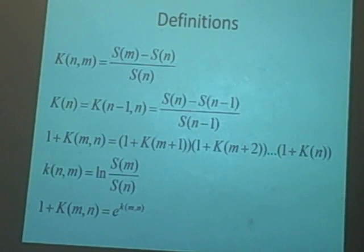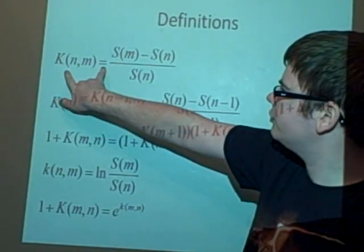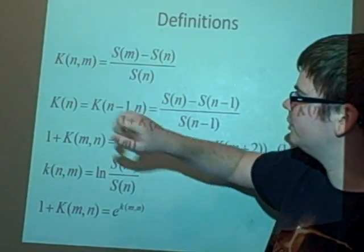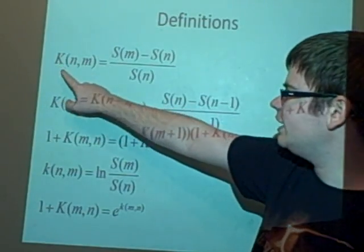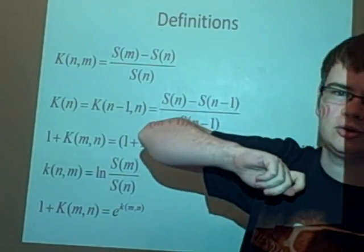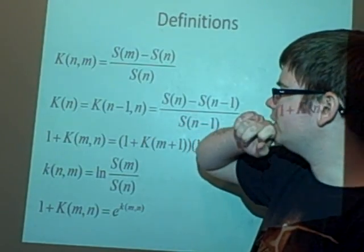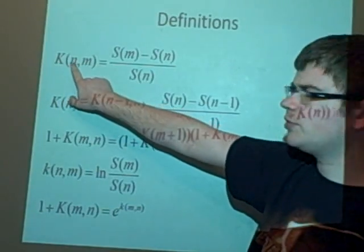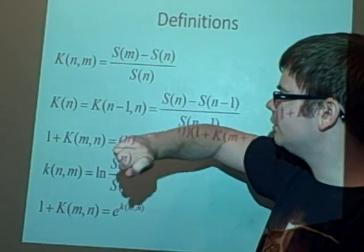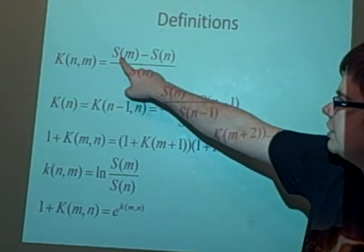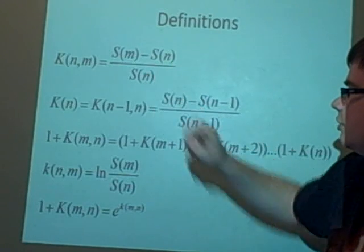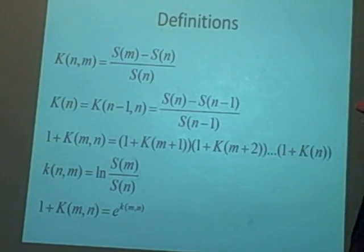Similar to the last video, we're going to work out the return. To find the return, here is our formula: K(n,m). Before we had the notation K with lowercase s for stock or V for wealth. We're using this here from point n to m. This means we take S(m) minus S(n) divided by S(n).